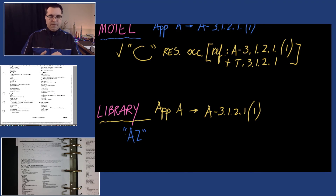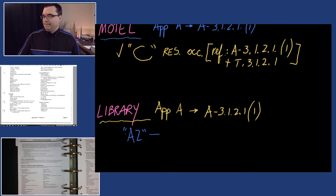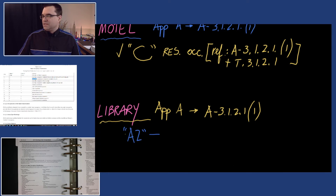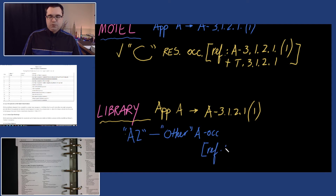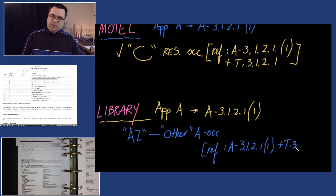So the only choice we have is A2. If we want to be thorough, Table 3.1.2.1 describes A2 as 'assembly occupancies not elsewhere classified in Group A' — I'll call these the 'other A occupancies.' For reference: A 3.1.2.1.1 plus Table 3.1.2.1. And again, don't forget we always start with the appendix.